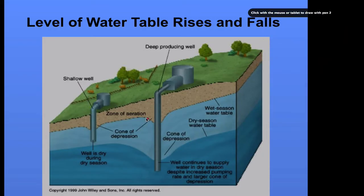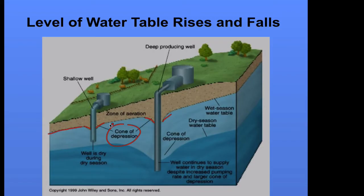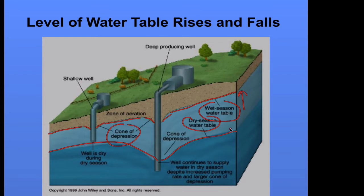We can see the cone of depression where our wells are. As we draw water up and out, we see a drop in the water table — that's the cone of depression. Notice the water table is still following the topography. This shows our wet season water table, which is noticeably higher.